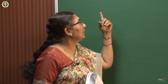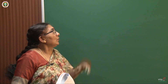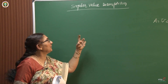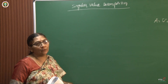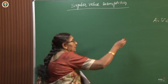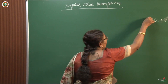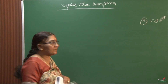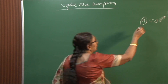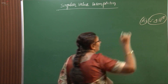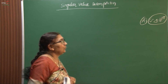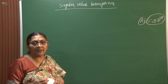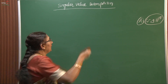Now first I am going to explain why this method is called singular value decomposition. Decomposition means the given matrix is factorized into a product of 3 matrices: U, delta, and V transpose. That is why we use the word decomposition.